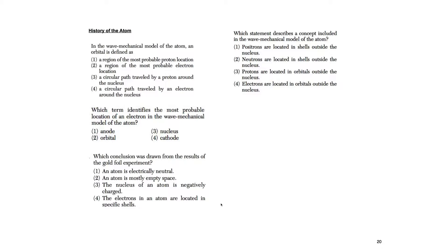Next: which conclusion was drawn from the gold foil experiment? Remember, he concluded two things: the atom is mostly empty space, and it has a positively charged nucleus. The answer here is that an atom is mostly empty space.